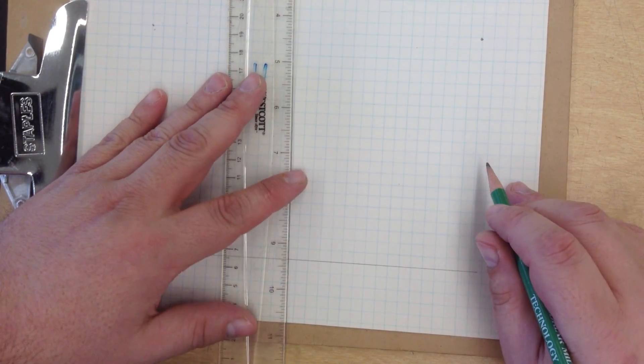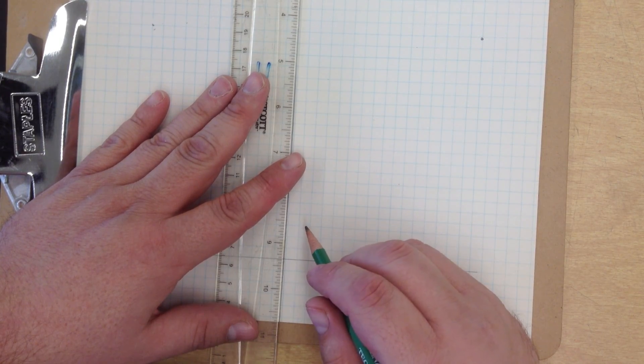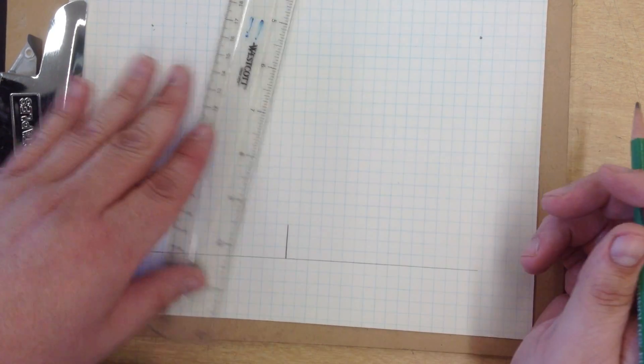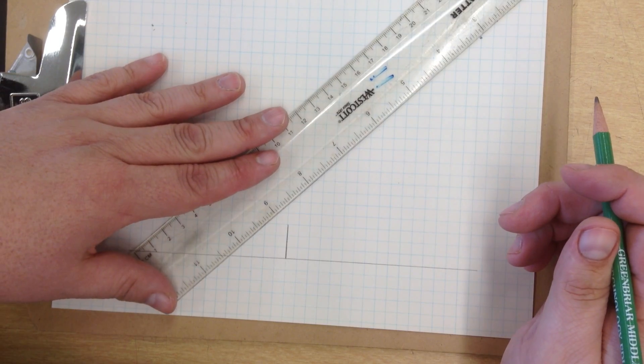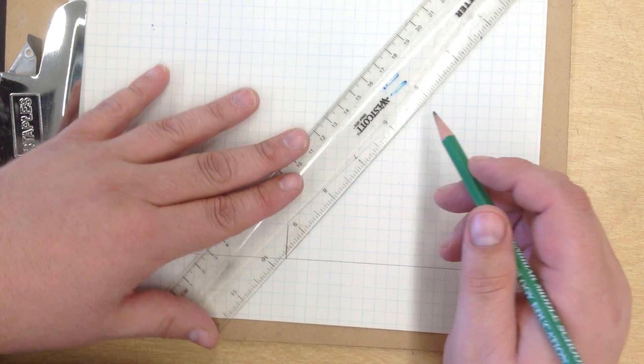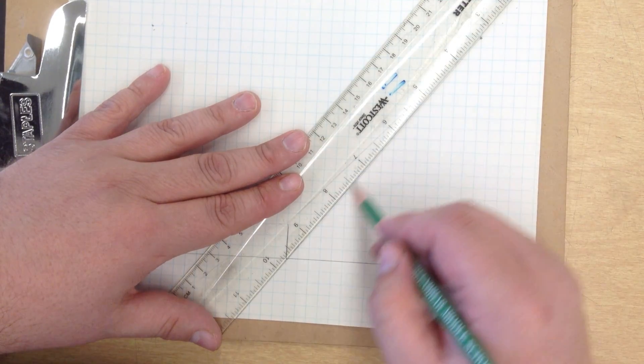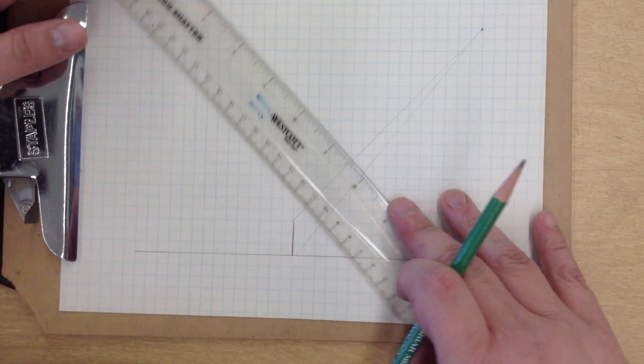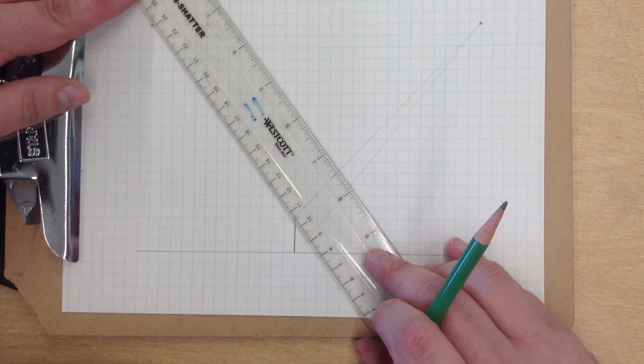I like to start with an origin line, just a straight line about midway through. Now that I have my origin line, I'm going to connect it to the right with some very light construction lines, and I'm also going to connect it with the left.